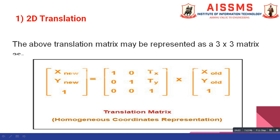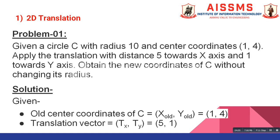Now, let us see one problem based on 2D translation. Our problem statement is given a circle C with radius 10 and center point coordinates 1 comma 4. And apply the translation with distance 5 towards X axis and 1 towards Y axis. And we have to obtain the new coordinates of C without changing its radius.